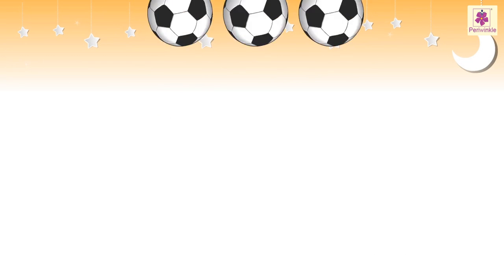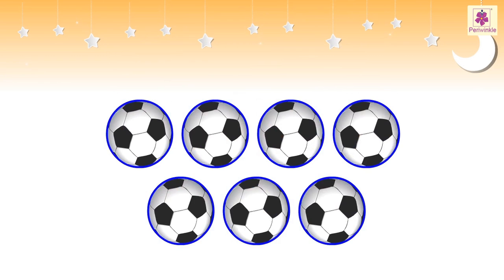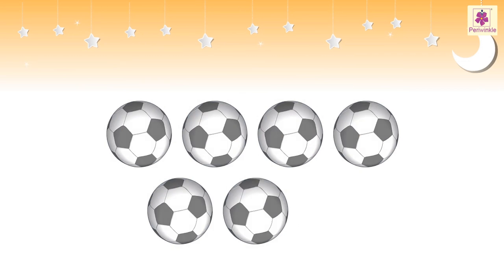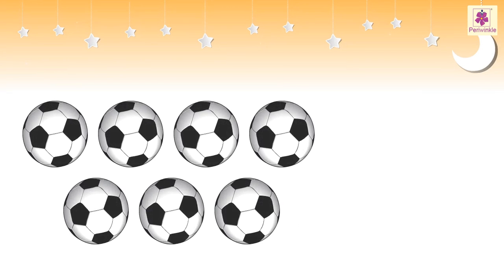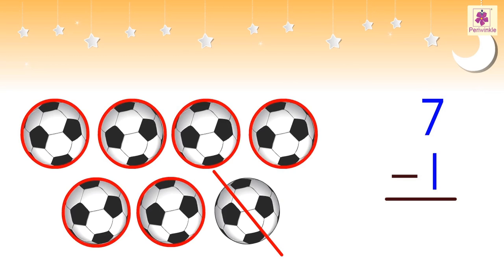For example, this is a group of seven balls. Let us take away one ball. As we take away one ball, we need to subtract one from seven. So, the number of remaining balls is six.